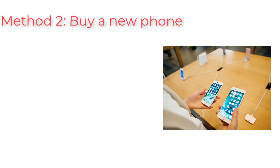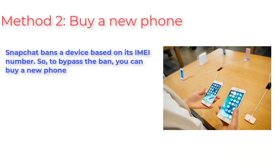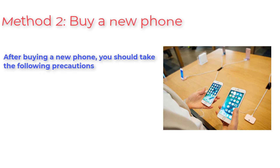Method 2: Buy a new phone. Snapchat bans a device based on its IMEI number, so to bypass the ban you can buy a new phone. After buying a new phone, you should take the following precautions.